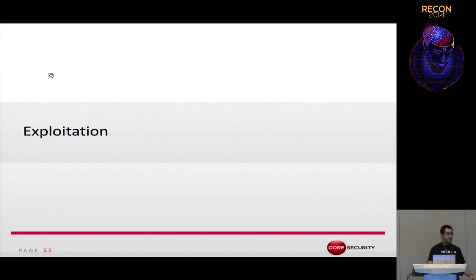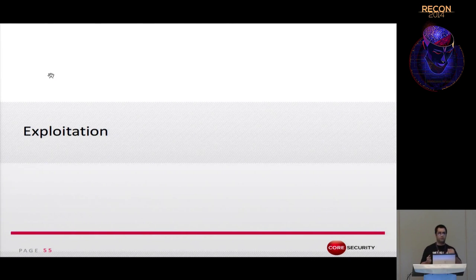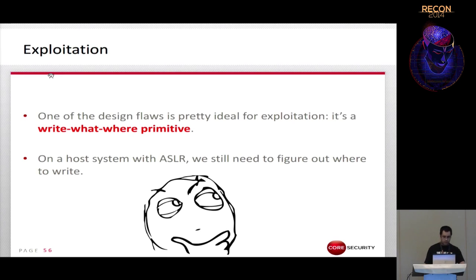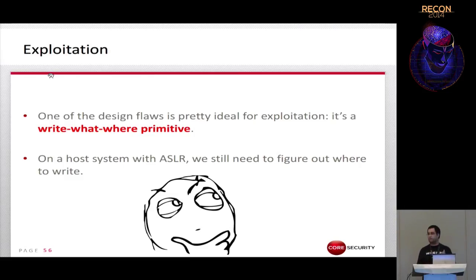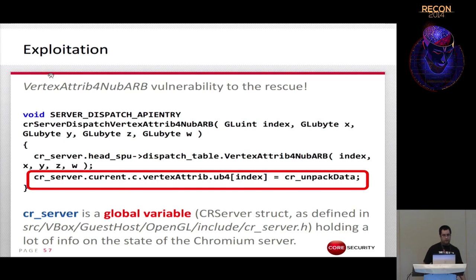Now let's see how to exploit these three vulnerabilities to escape from the VM and execute arbitrary code on the host. The first vulnerability is a write-what-where primitive — very powerful — but if the host OS has ASLR, we need to know where to write. The third vulnerability comes to the rescue here.